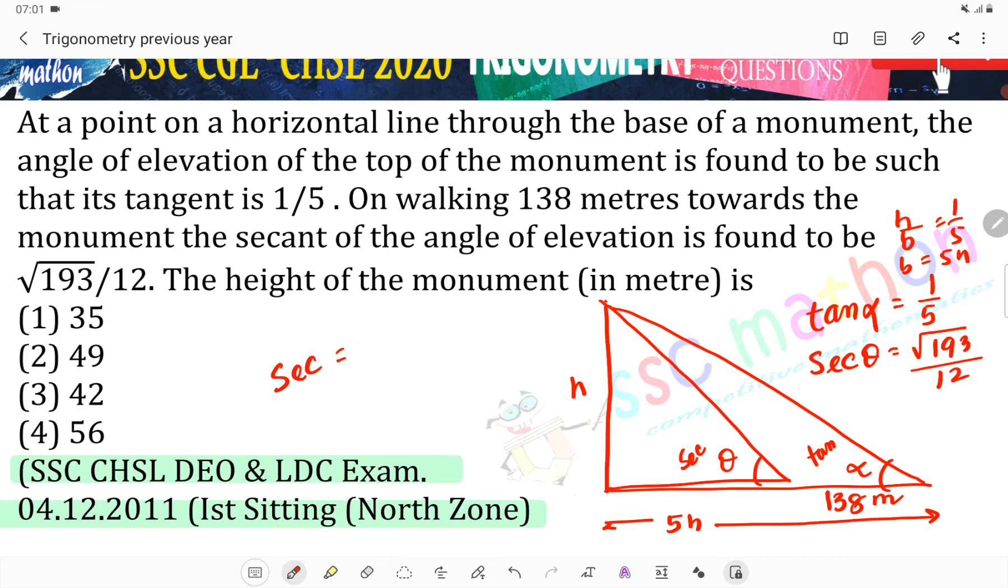Sec(θ), what is cos(θ)? Base upon hypotenuse. So sec(θ) = √193/12. From sec²(θ) = 1 + tan²(θ), we get 193/144 = 1 + tan²(θ). So tan²(θ) = 193/144 - 1 = 49/144. Therefore tan(θ) = 7/12.